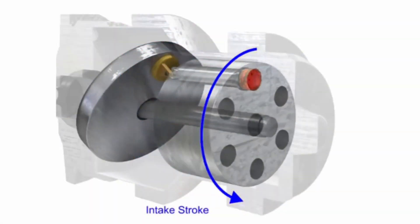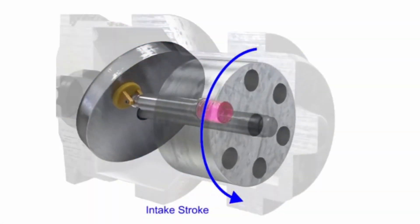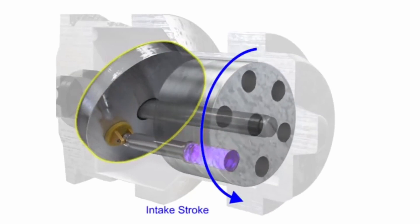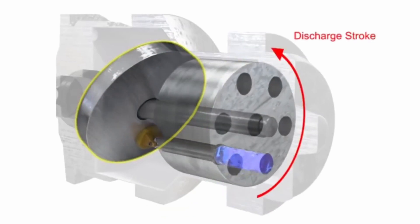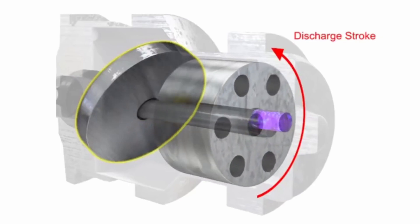On the intake stroke, the pistons are pulled back by the swash plate angle, causing fluid to fill the empty space. On the discharge stroke, the angle of the swash plate forces the piston back inside the piston block and discharges the fluid.